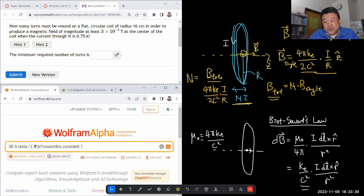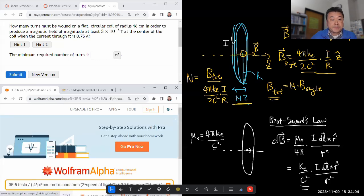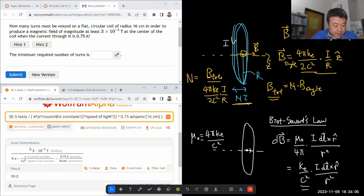It is actually extra work to do it this way than just use permeability of free space, which you are welcome to do. You can also call it magnetic constant in Wolfram Alpha. 2 times the speed of light squared times the current, 0.75 ampere divided by r, 16 centimeters. And Wolfram Alpha will convert the unit for me, so I can just put it in this way. Okay, and we get, make sure it understood me correctly, we get a unitless result, which is what we want.